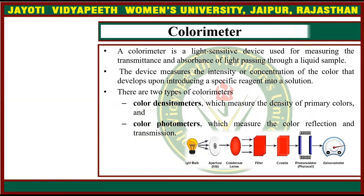The device measures the intensity or concentration of a color that develops upon introducing a specific reagent into a solution. There are two types of colorimeters: color densitometers, which measure the density of primary colors, and color photometers, which measure color reflection and transmission.